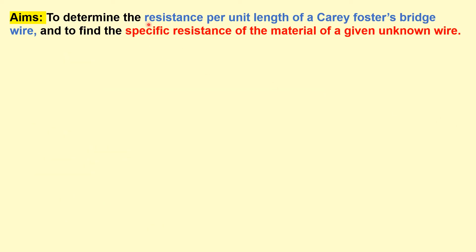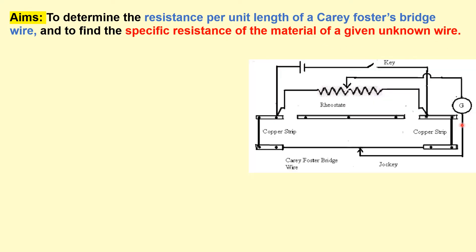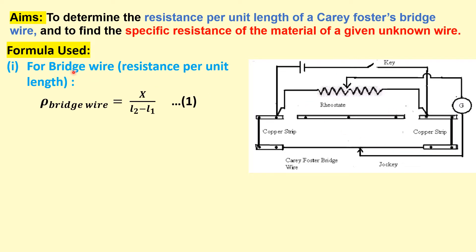The aims of this experiment are: first, to determine the resistance per unit length of the Carey-Foster bridge wire, and second, to find out the specific resistance of the given unknown wire. This is the experimental setup — we have a resistance box, a galvanometer, and two slots to use the known resistance and the unknown wire for calculations.